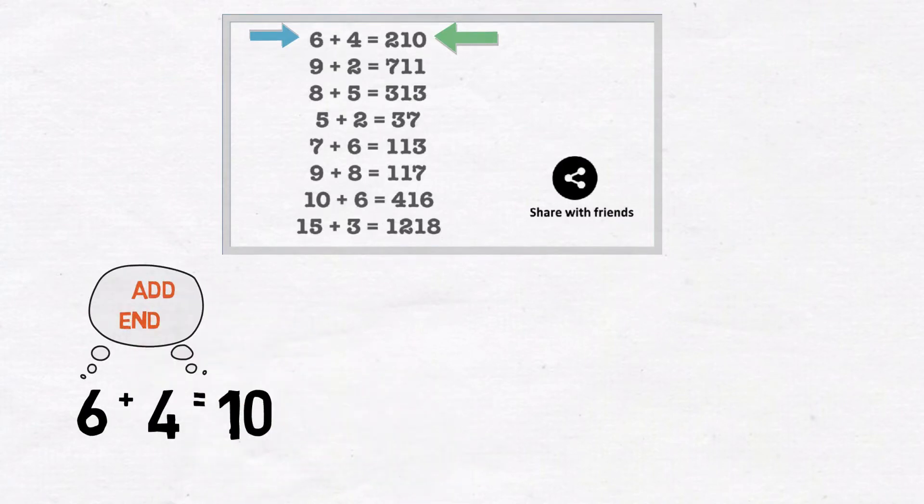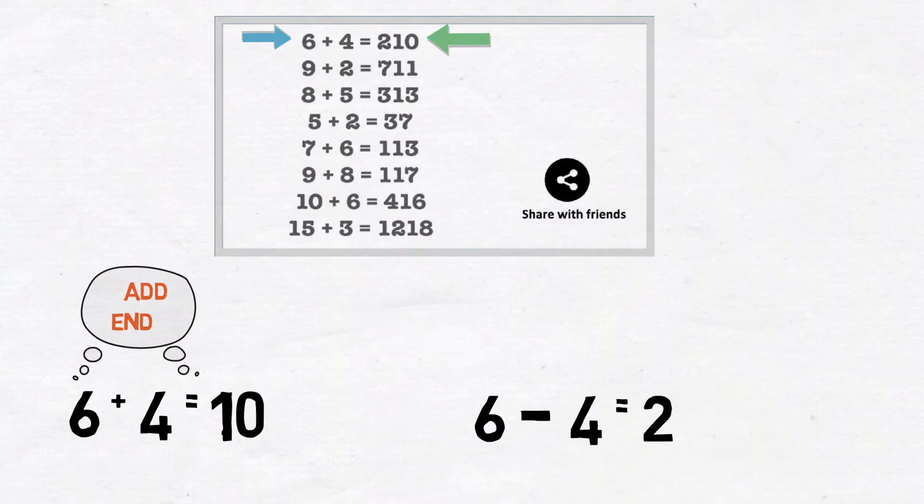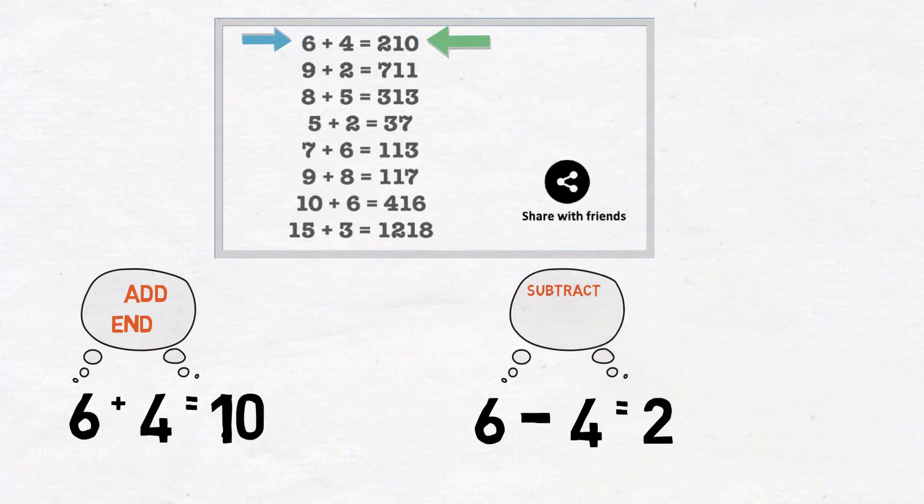So then there are two things to note out here, addition and end. And once again, using the power of intuition, let us subtract the numbers and see if the result appears somewhere. It sure does, towards the beginning. So let's note, subtract and beginning. Now let us quickly check if this formula applies to all the numbers in this question. It does. Great.